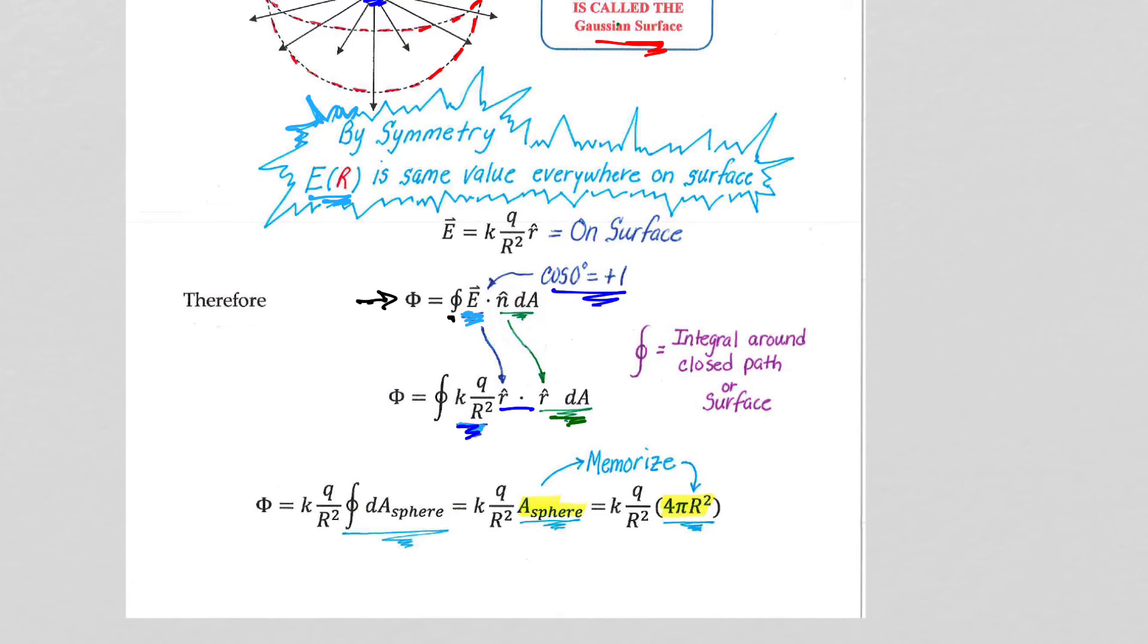And that fancy notation, that little circle that we put on the integral, please make sure you get this into your notes over here, that that circle around the integral means that you are integrating around a closed path, if it was one-dimensional, or in this case, surface, in the case for the two-dimensional dA integral, that we're calculating the entire area.